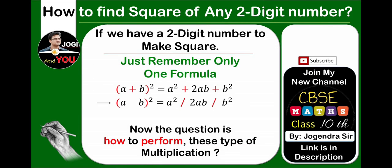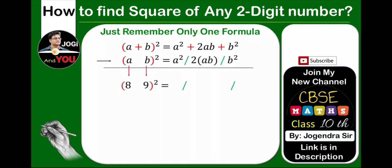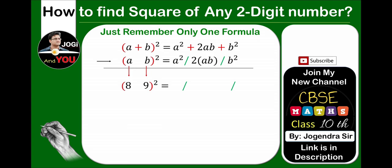Now, the question is how to perform this type of multiplication? Here is the formula and how to apply this. Just watch carefully. My chosen number is 89, square of 89. How to perform this method by this formula? Watch. A is 8, B is 9.